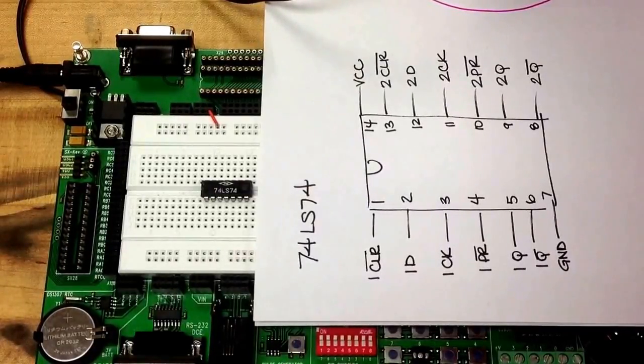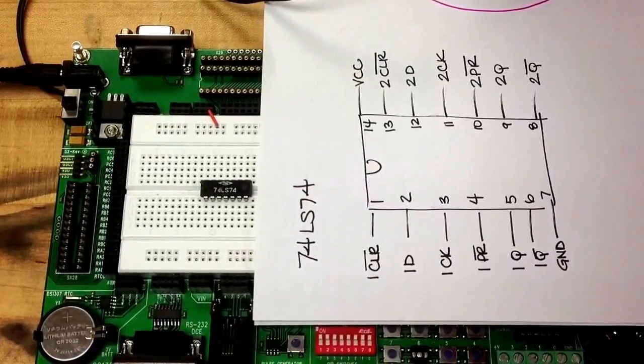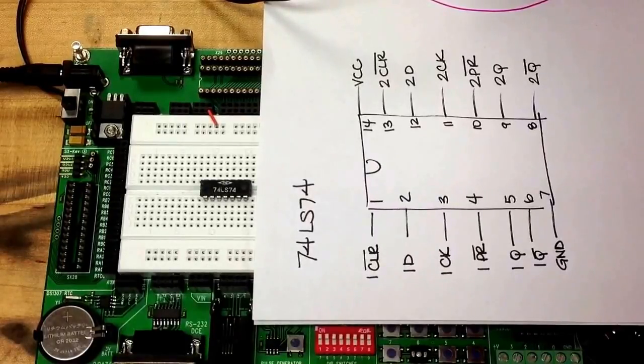Okay, so now I want to build the 0 to 3 up counter I just showed you how to make.